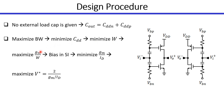We already have a predetermined GM, so we need to maximize the GM over ID ratio. In order to maximize this ratio, we need to bias our device in the strong inversion region. We need to maximize V-star because the minimum GM over ID is in the strong inversion region, and GM over ID is inversely proportional to V-star.